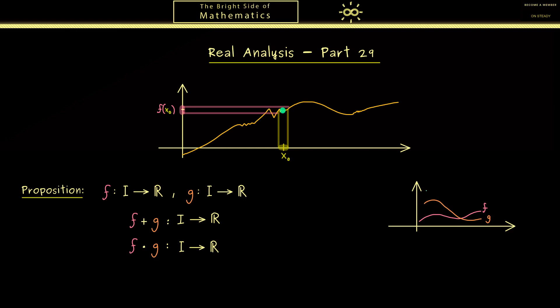So this is not so complicated, you can combine functions in this way by simply applying the operation to the values. In other words these two graphs here give us a new graph there. Now the question is what happens with the continuity when we fix one point x0 here.